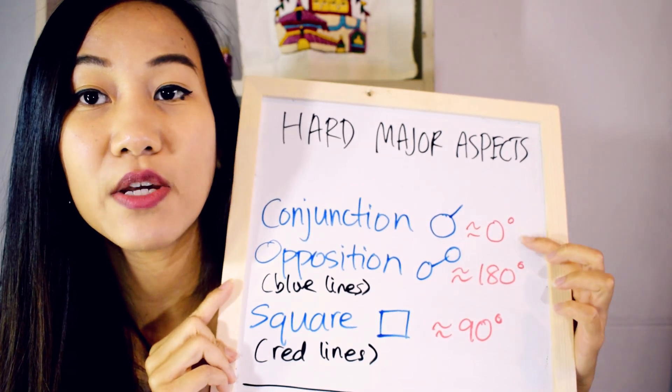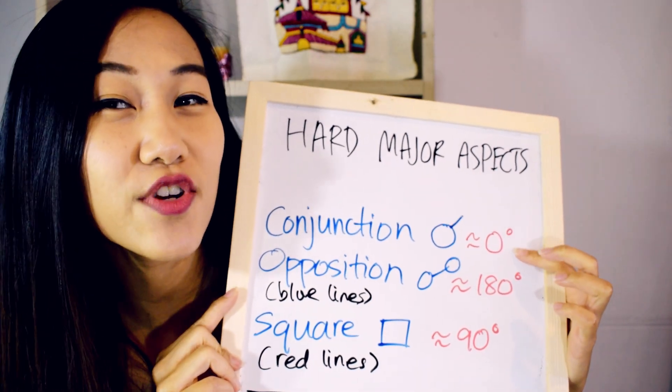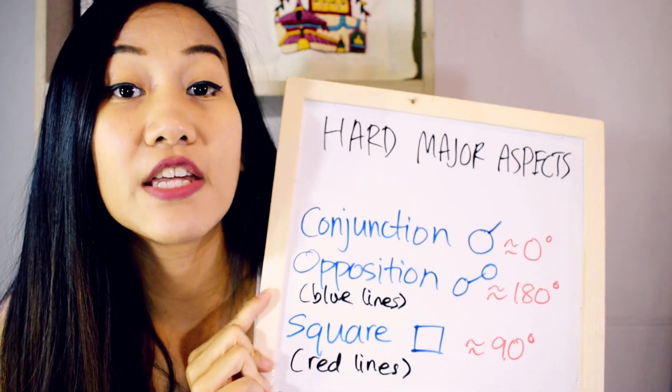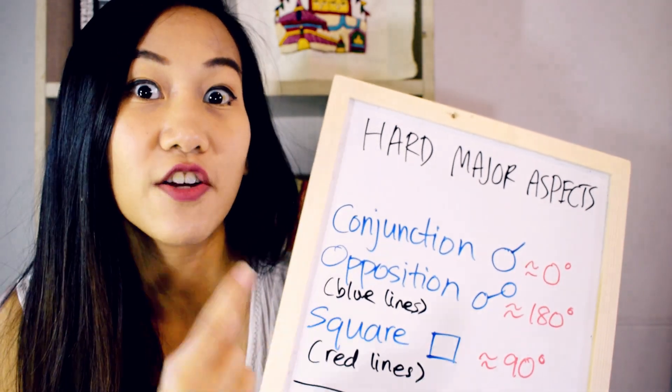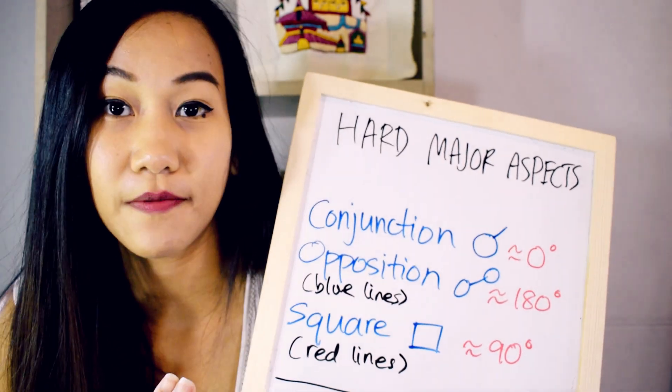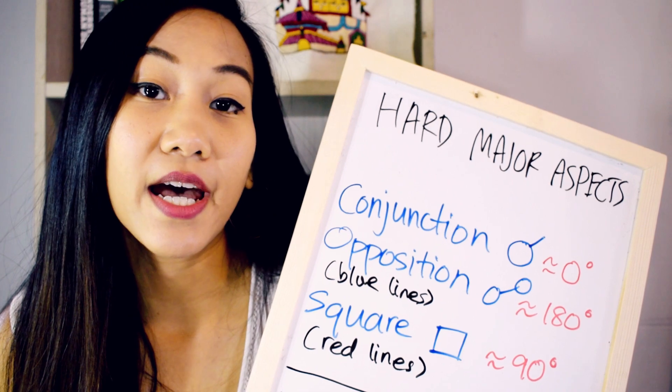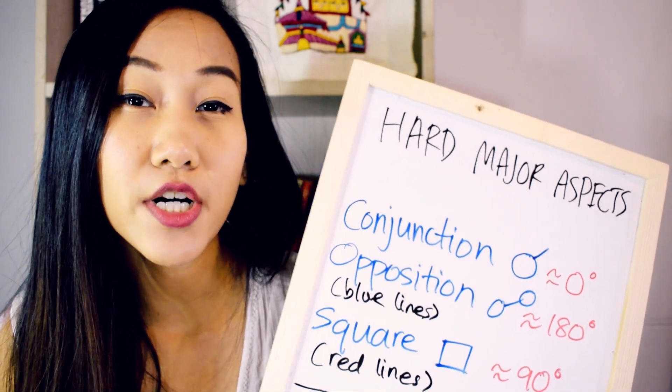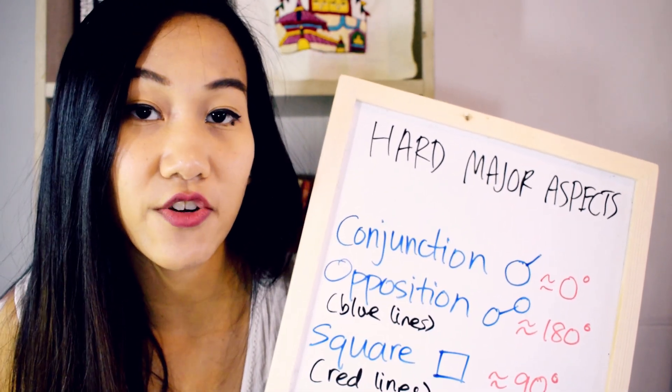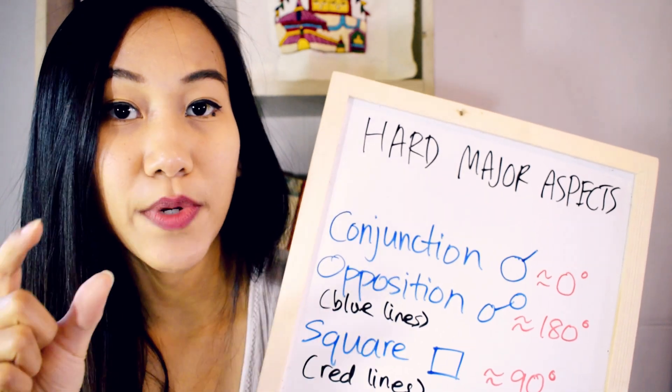The conjunction is when planets need to be within zero to about 10 degrees of each other. They can be in the same sign or they can be in a different sign to be considered a conjunction. So a Venus in Gemini at 20 degrees, let's say, and a Mercury in Gemini at 23 degrees are going to be in a conjunction with a three-degree orb.